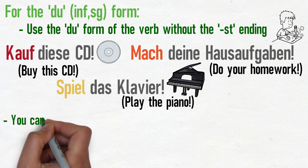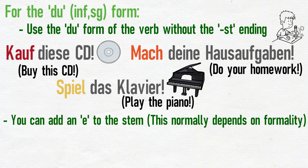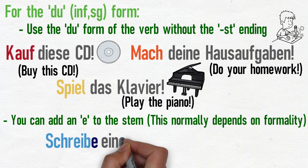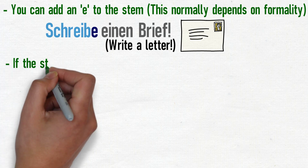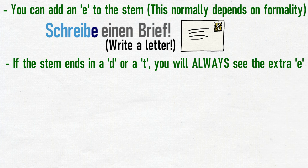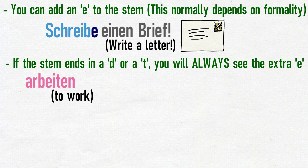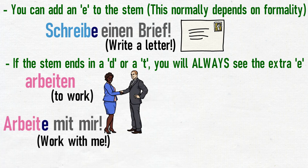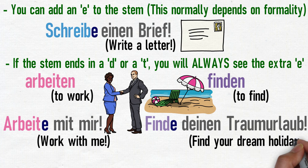It is also possible to add the letter E to the stem, and this tends to depend on the formality of the situation, personal preference, or region. Zum Beispiel: Schreibe einen Brief — Write a letter. If the stem of the verb ends with a D or a T, you will always see the extra E. For example: arbeiten (to work) — Arbeite mit mir, work with me. Finden (to find) — Finde deinen Traumurlaub, find your dream holiday.